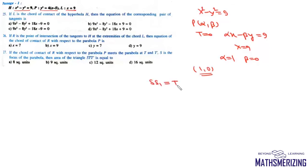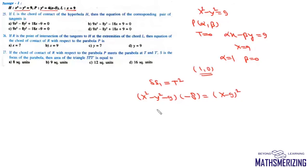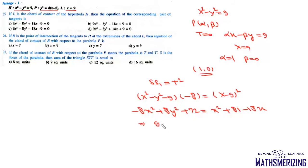We find the equation of the corresponding pair of tangents using SS₁ = T². Here S = x² − y² − 9, S₁ = 1 − 0 − 9 = −8, and T = x − 9. So we get −8(x² − y² − 9) = (x − 9)², which expands to −8x² + 8y² + 72 = x² + 81 − 18x, giving the equation of the pair of tangents. That's option B.